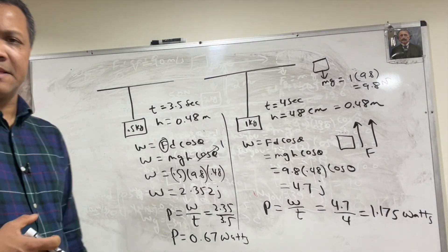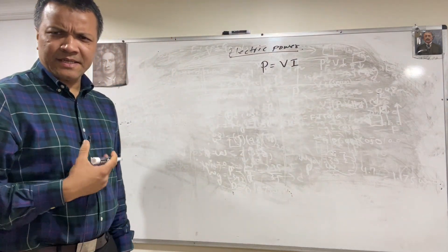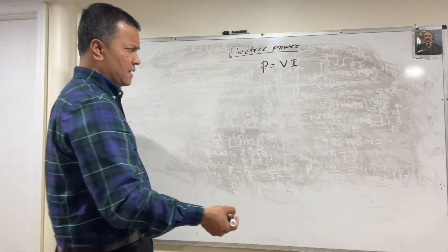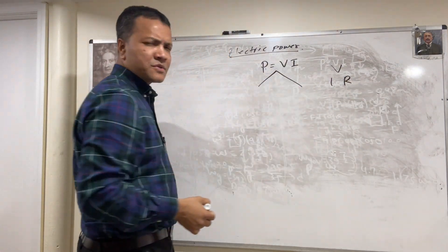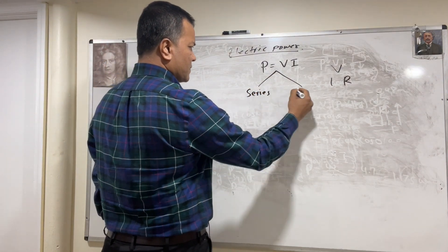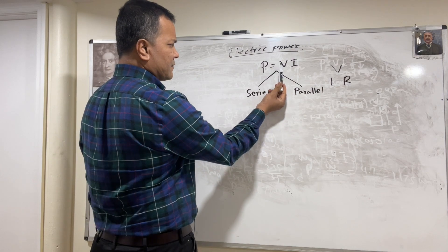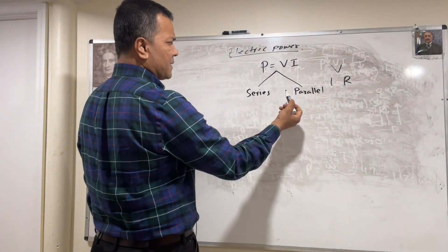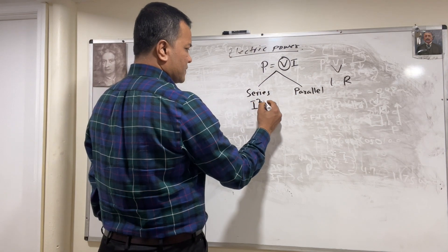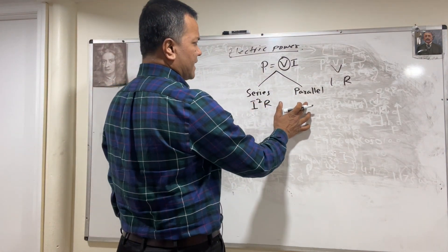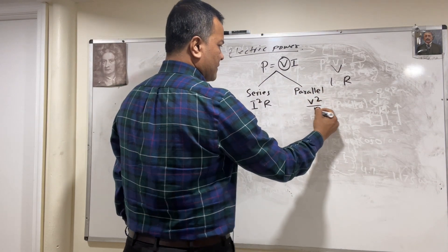Now we're going to consider electric power. Power equals voltage times current. We're going to derive two equations using Ohm's law — one for series and one for parallel. Ohm's law tells us V equals IR. For the series case, we replace V by IR, so P becomes I squared R. For the parallel case, I is replaced by V over R, so P becomes V squared over R.